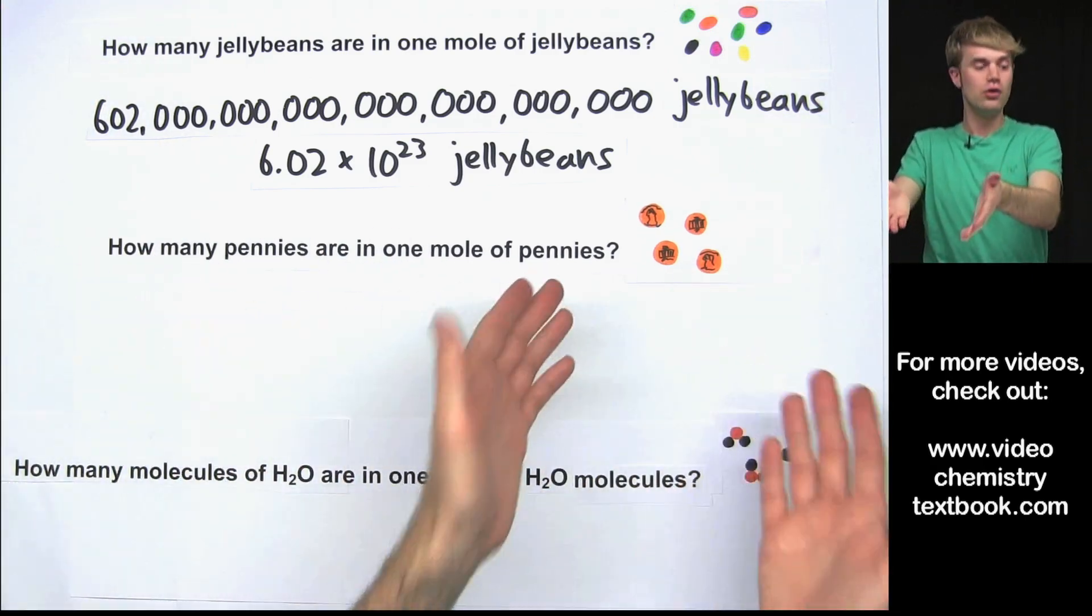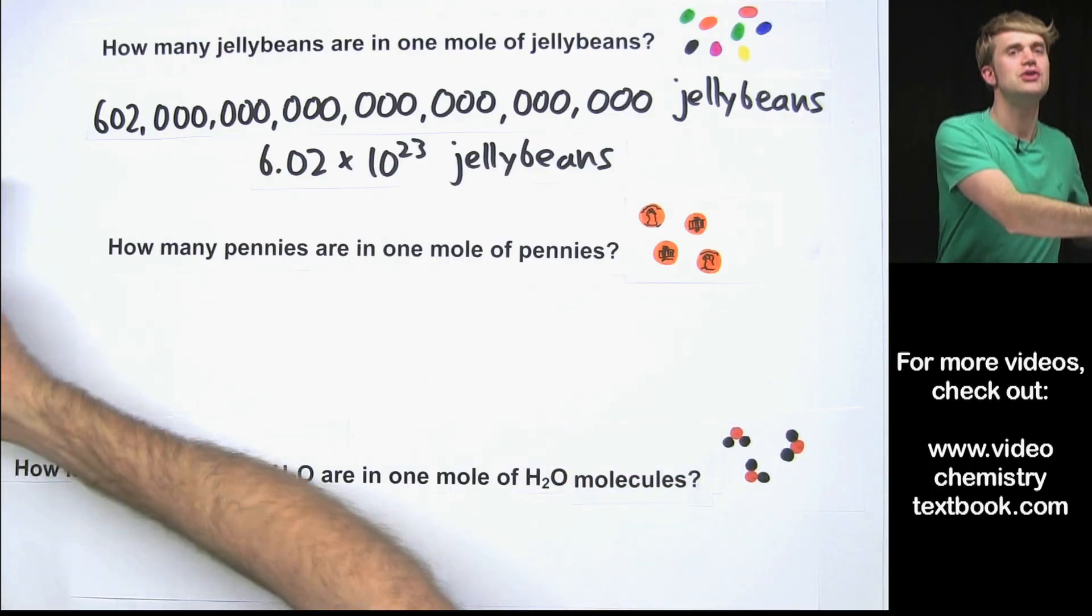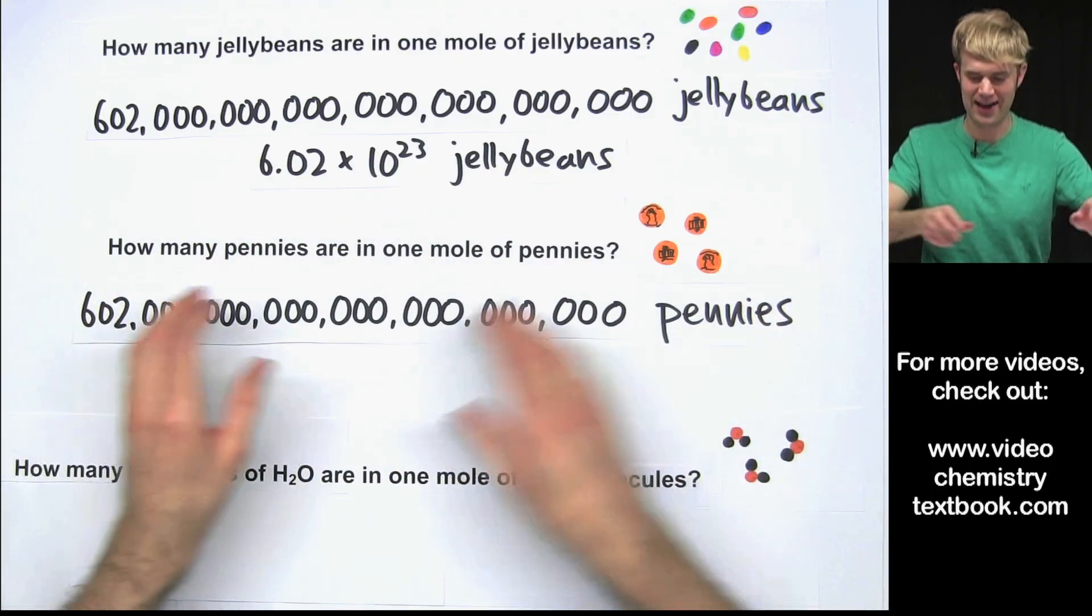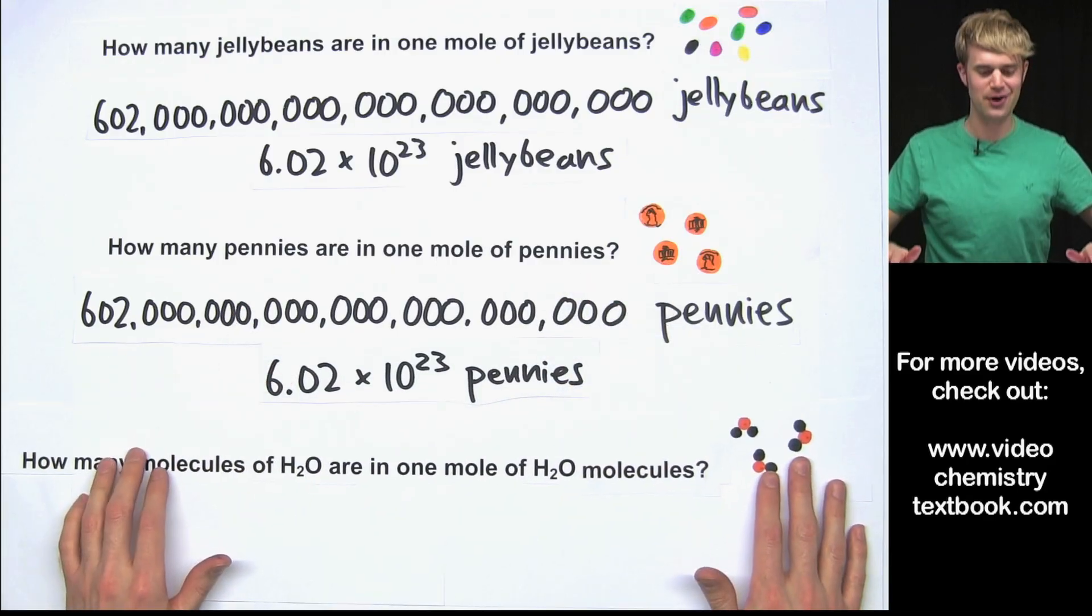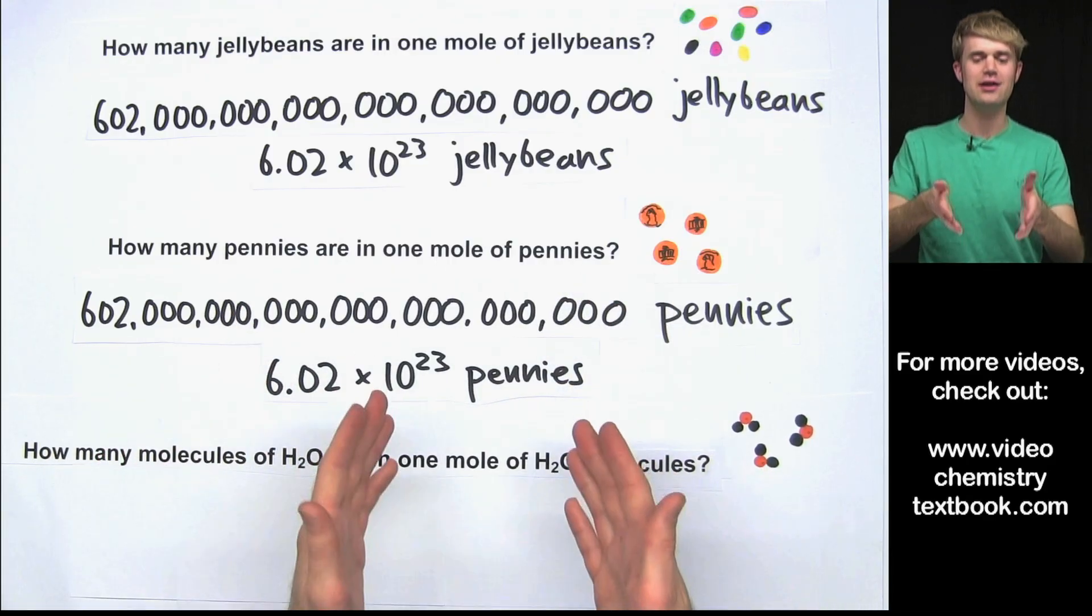Or we could have a mole of pennies. How many things in a mole of pennies? 602 hexillion pennies in that mole or we can abbreviate it as 6.02 times 10 to the 23rd pennies.